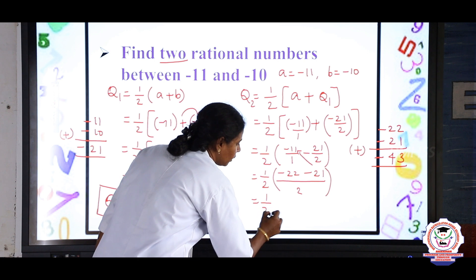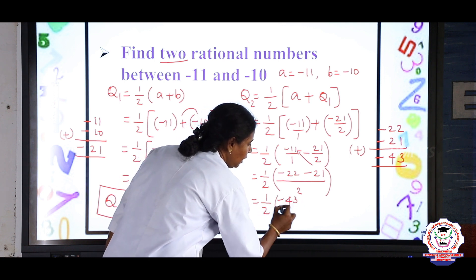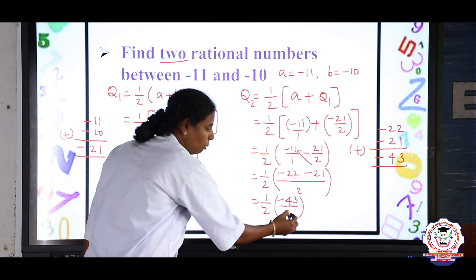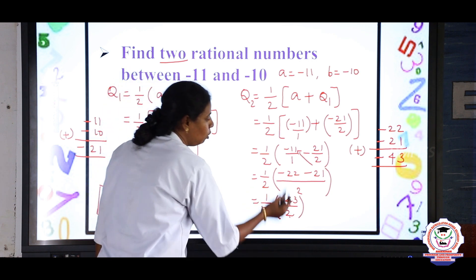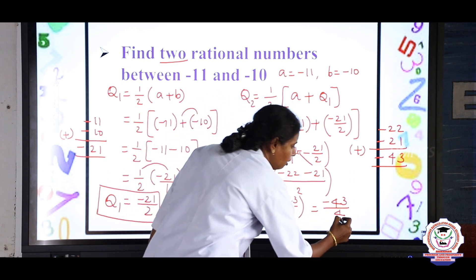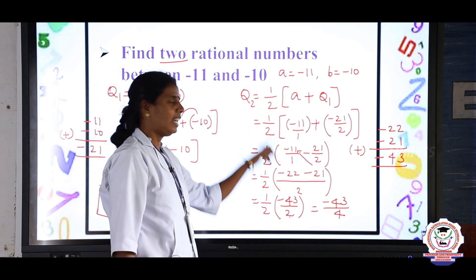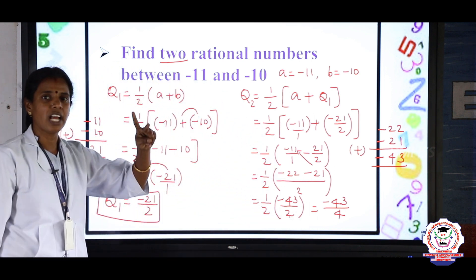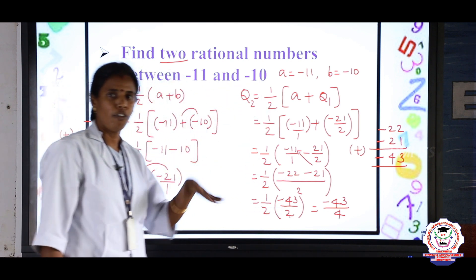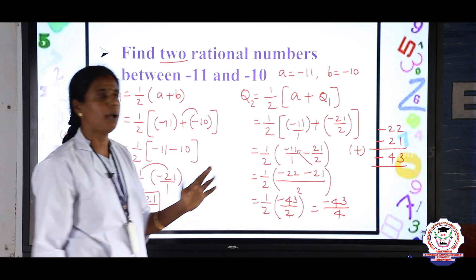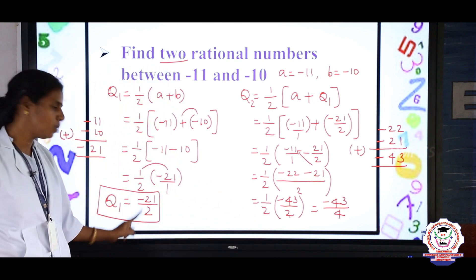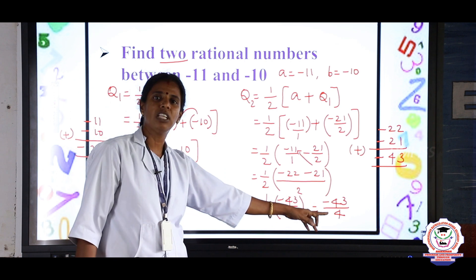Now multiply: 1/2 × (minus 43/2). Numerator times numerator: 1 × minus 43 = minus 43. Denominator times denominator: 2 × 2 = 4. So Q2 = minus 43/4. Therefore, the 2 rational numbers between minus 11 and minus 10 are Q1 = minus 21/2 and Q2 = minus 43/4.